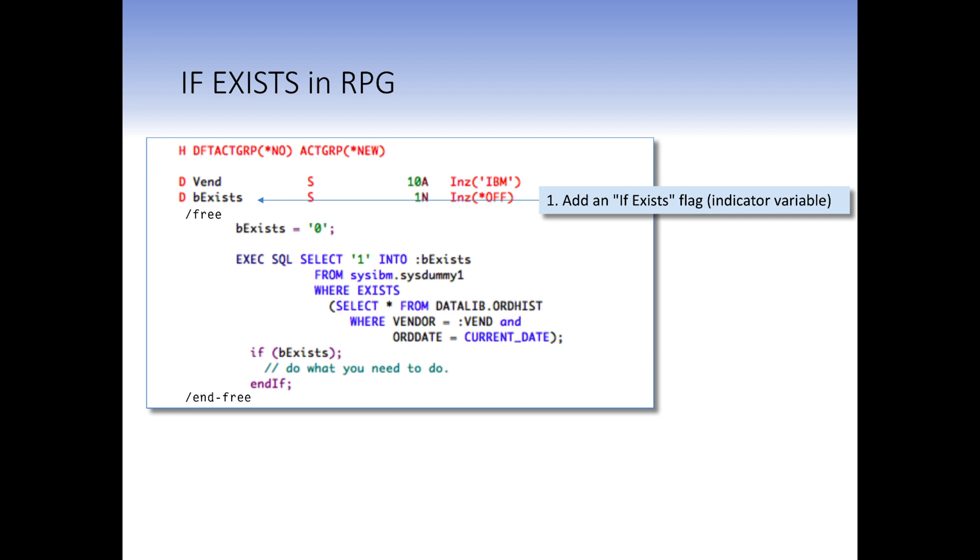What we do is we create a host variable. In this case, I'm calling it exists. It's got to be in front of it to mean it's an on or off switch or an indicator, as we call them in RPG. So we add an if exist flag to the source code. Then we initialize it to zero right before we run the select statement that we're about to run, so that we make sure that it's set off before we run the thing. Then we go ahead and we run a select and we code select quote one quote into our exists variable, our exists host variable.